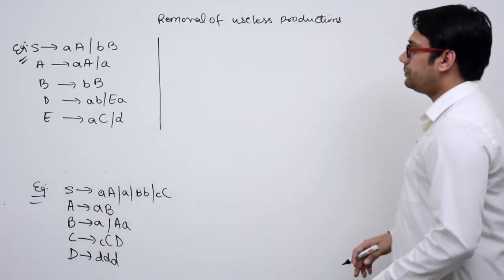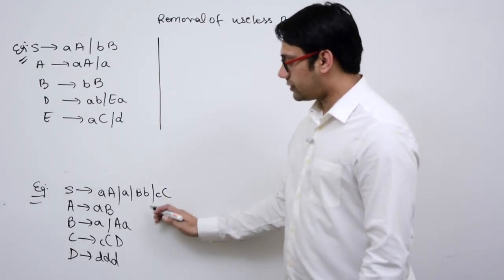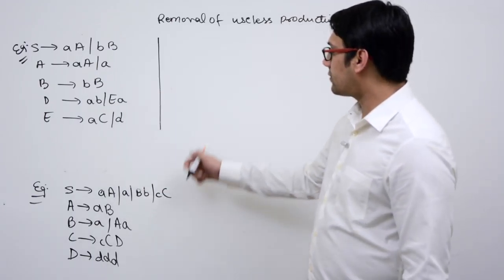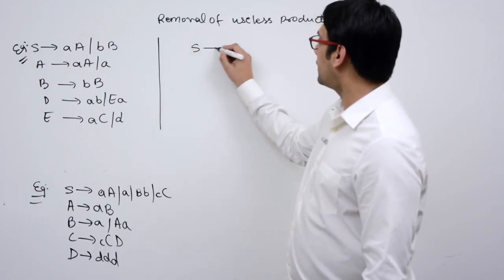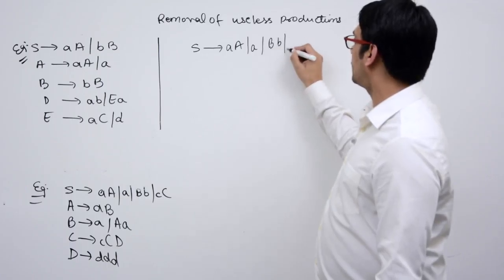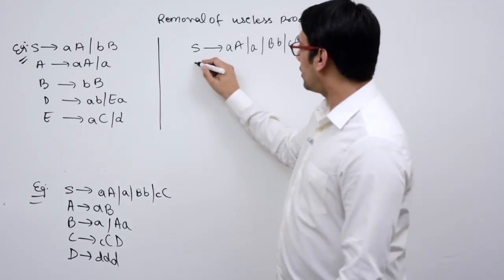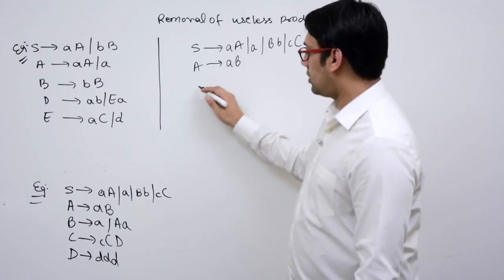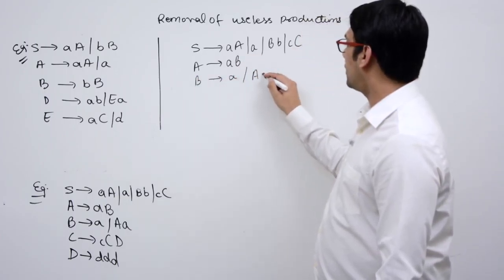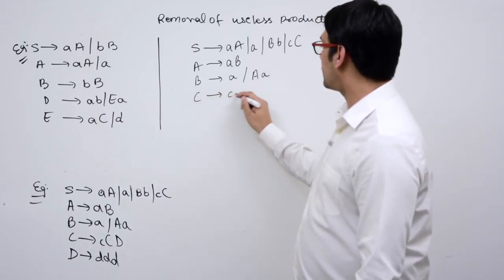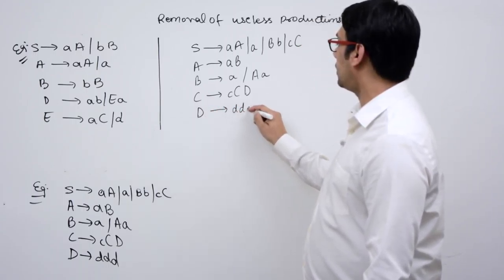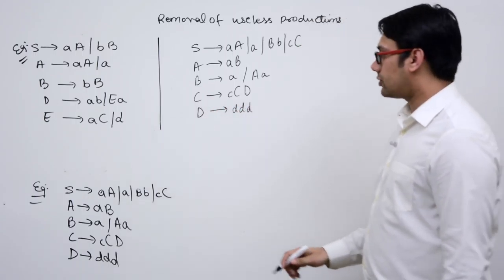Let us try to see this example from the previous video. Here we have: S derives A, A derives a slash a slash b, B derives a slash a, C derives cc slash d, and D derives dddd. The first step is to find all the useful productions.